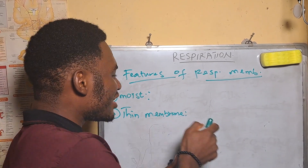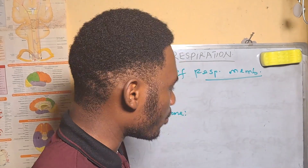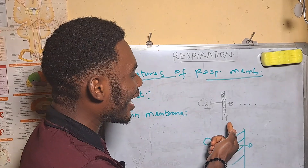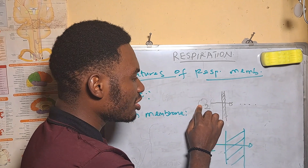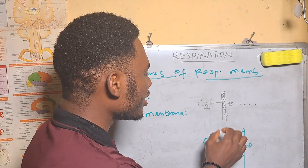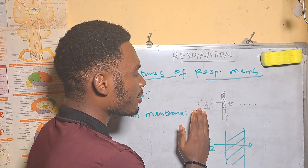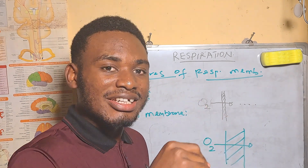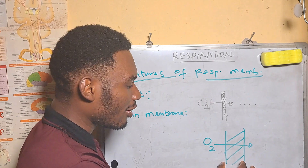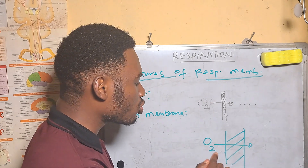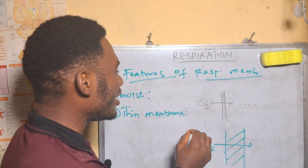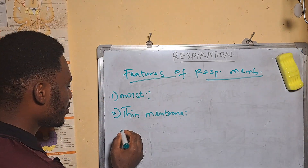These organs must have a thin membrane. This thin membrane helps diffusion to be fast. For an ideal respiratory membrane, the membrane must be one cell thick — this decreases the distance for diffusion. If the membrane is thicker, it is going to prolong the diffusion time for oxygen to move across. So an ideal respiratory membrane must be thin.